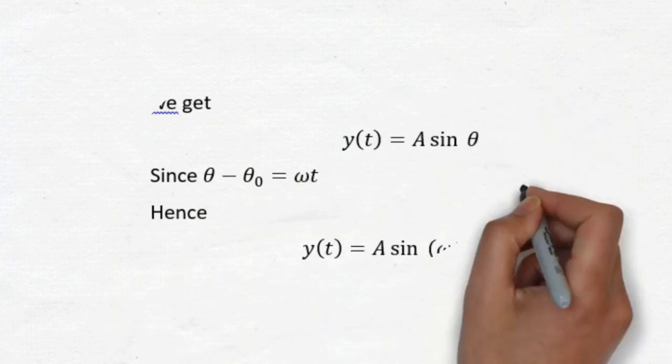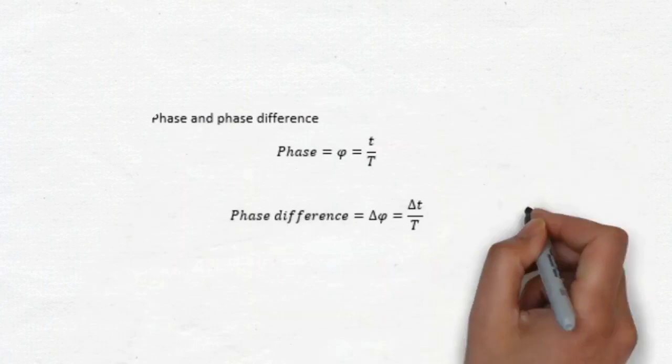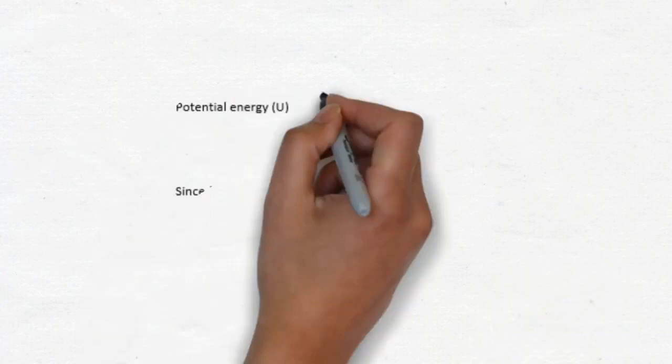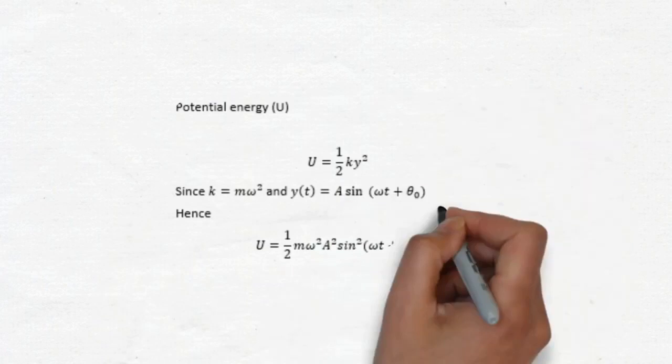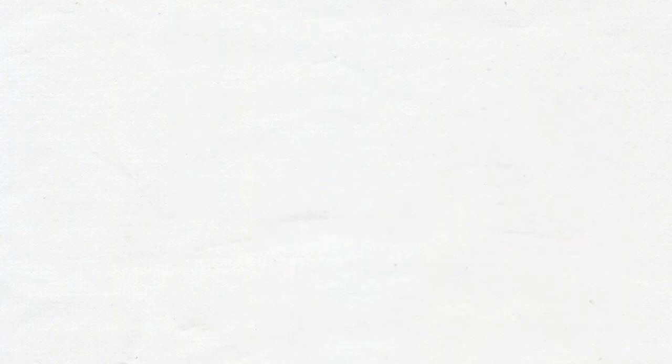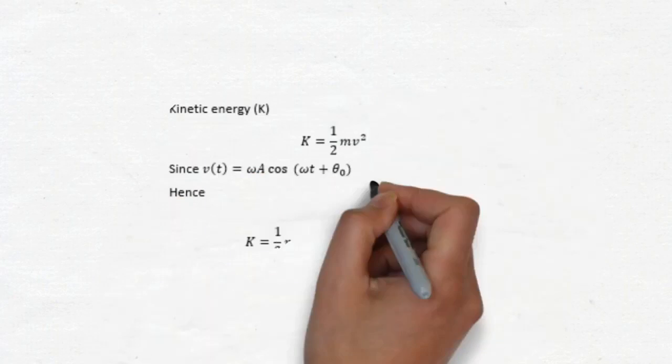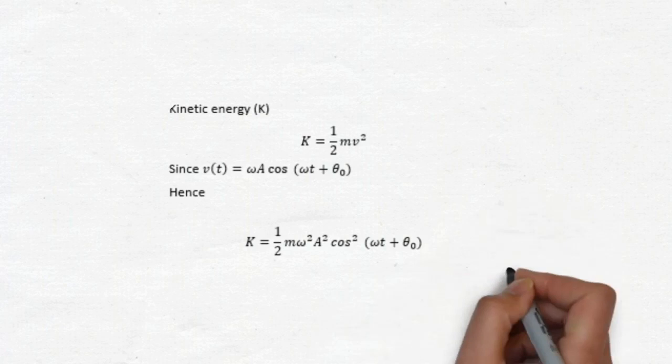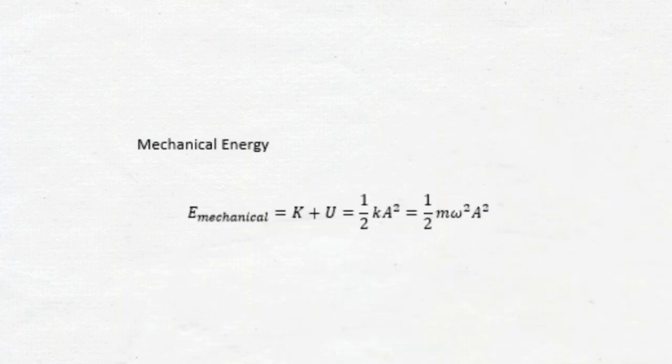The oscillation has phase. It also has potential energy. And here's the formula. Also, the kinetic energy. And mechanical energy. Every oscillation has period. And here's the formula.